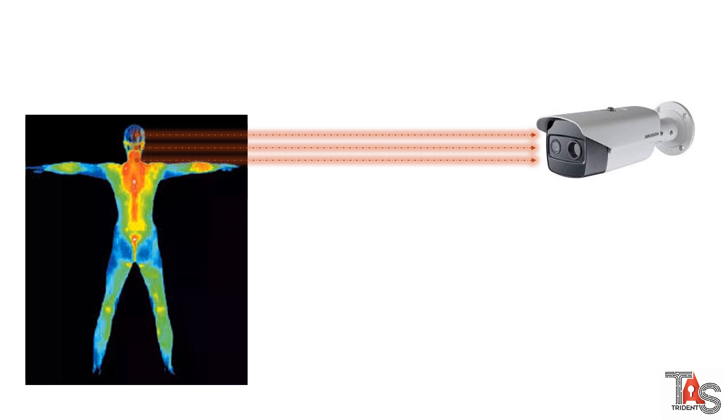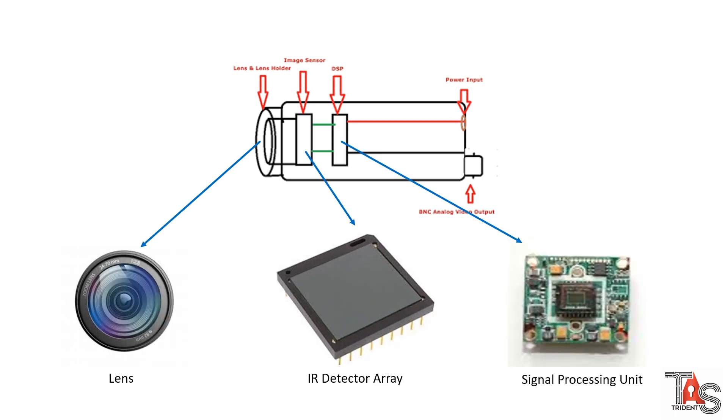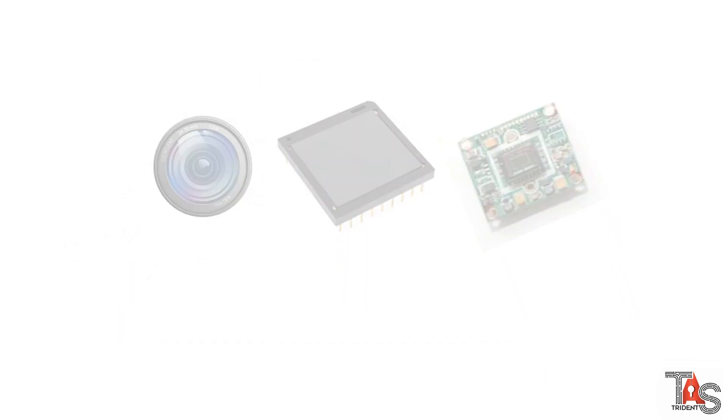Thermal cameras can capture these infrared lights generated from human body. The main components inside a camera which produces the thermal image are its lens, array of infrared detector and signal processing unit. Now let us see how these components work.